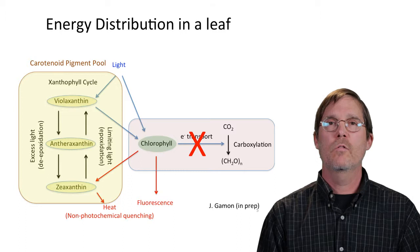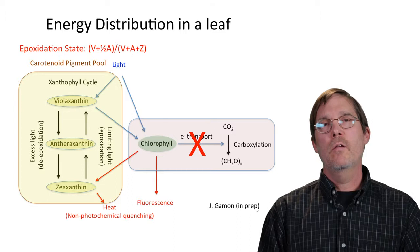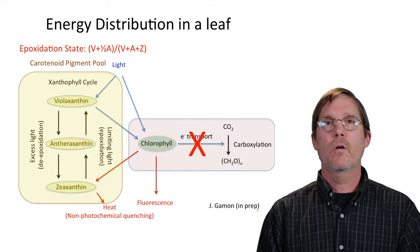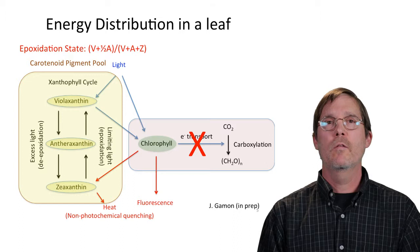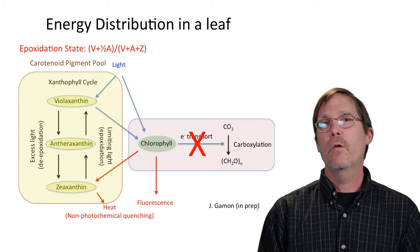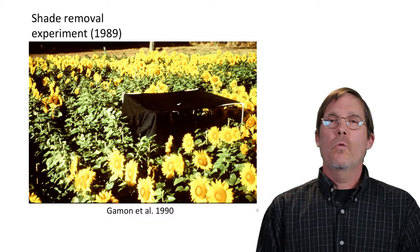One way to summarize the change in the xanthophyll cycle is through the epoxidation state, which is the content of violaxanthin plus half the antheraxanthin, divided by the sum of the three xanthophyll cycle pigments. That formula — the epoxidation state, or EPS — will come up in a subsequent slide. The story of PRI really began with some experiments in the late 1980s.